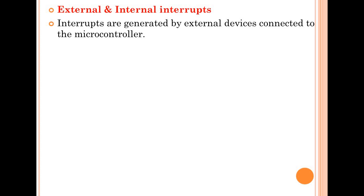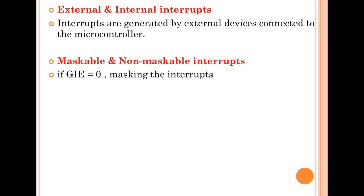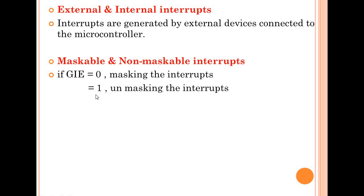Interrupts are also classified as maskable and non-maskable. Maskable interrupts are those which can be disabled and enabled, but non-maskable interrupts cannot be disabled. The GIE bit — Global Interrupt Enable — in the status register is used for enabling and disabling maskable interrupts. If GIE equals 0, interrupts are not allowed — they are masked. If GIE equals 1, interrupts are allowed — they are unmasked.